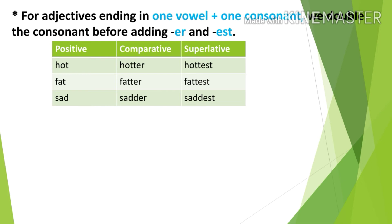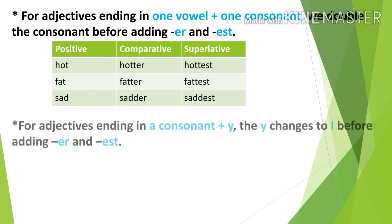Rule 2: for adjectives ending in one vowel plus one consonant, we double the consonant before adding -er and -est. For example, 'hot' — 'o' is the vowel and 't' is the consonant; double the 't' to get 'hotter' and 'hottest.' Similarly: fat → fatter → fattest; sad → sadder → saddest.